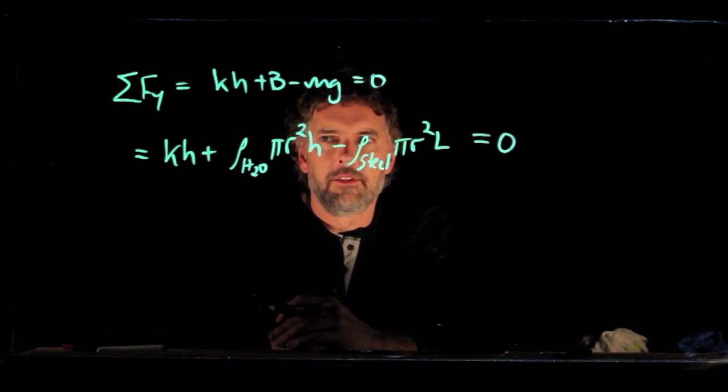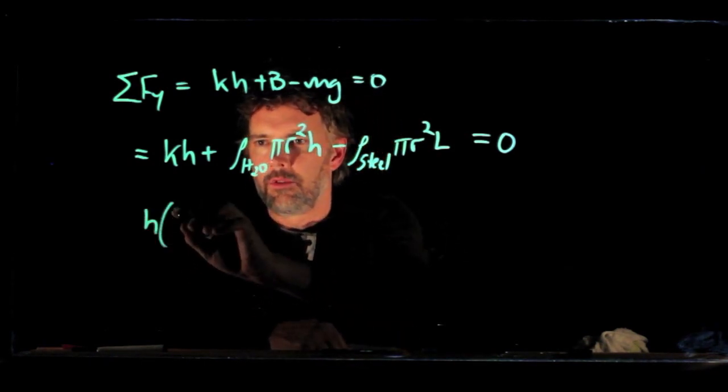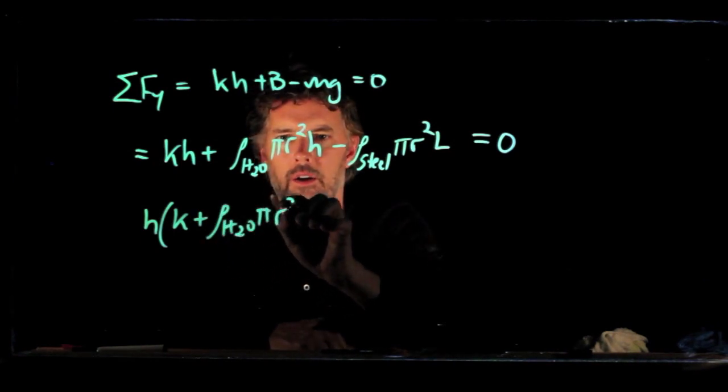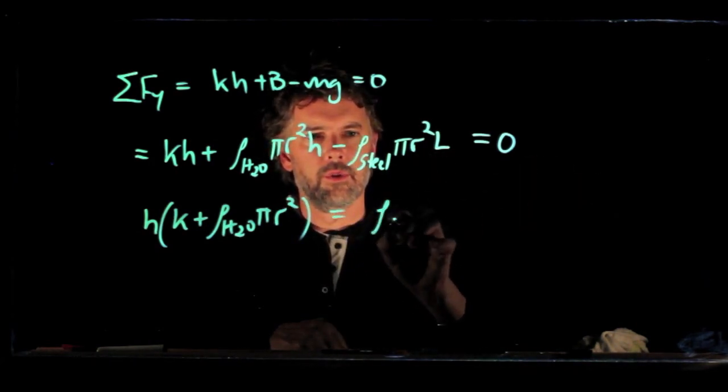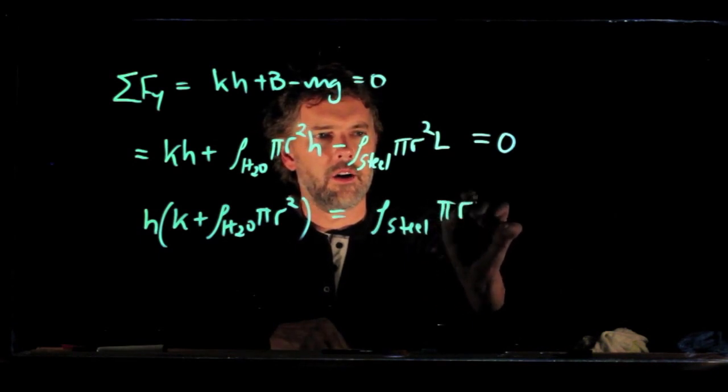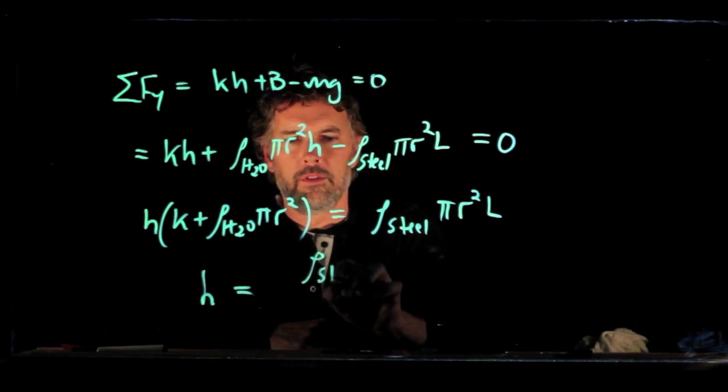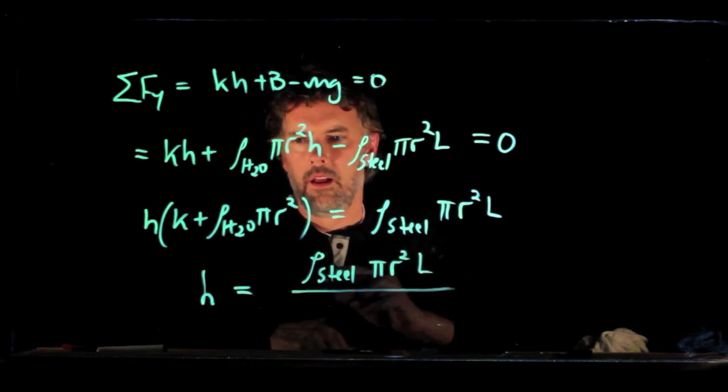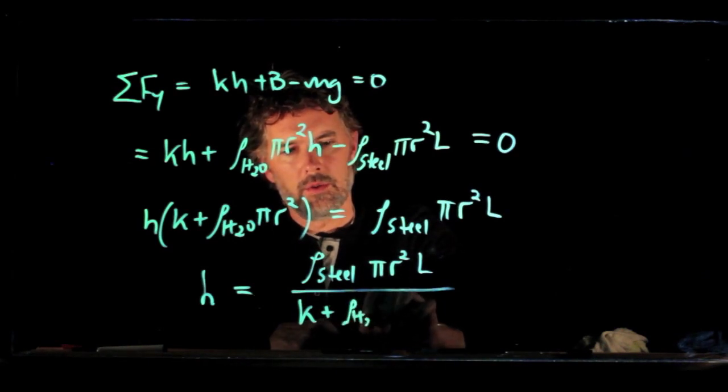So we need to solve this equation for h. It's not too bad. We have h times the quantity k plus rho h2o pi r squared. I'm going to move this stuff over to the other side. So this equals rho steel pi r squared times l. And finally, you can solve this for h. We get rho steel pi r squared times l all over k plus rho h2o pi r squared.